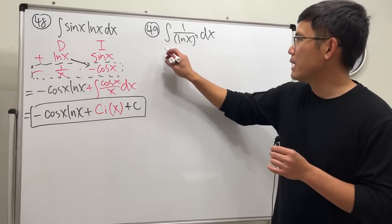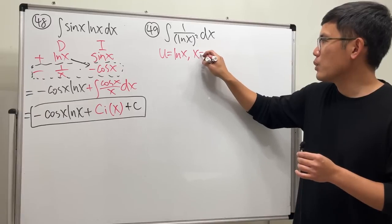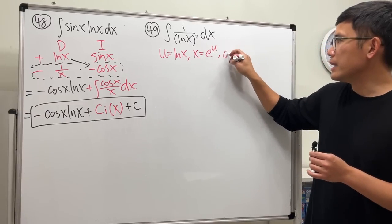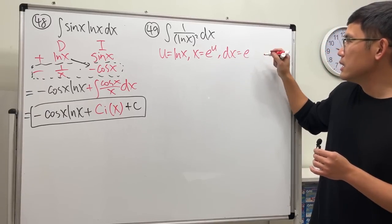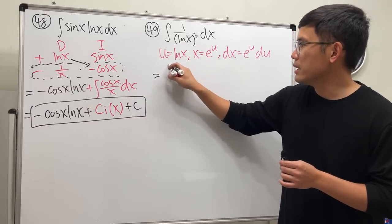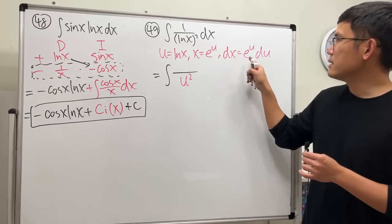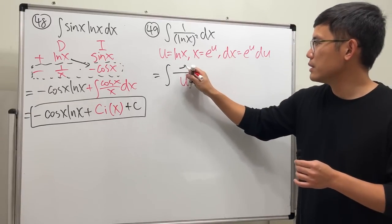I will still do u-sub. Let u equal ln x, so x equals e to the u, and then dx is e to the u du. This right here is the integral, and then we have u squared. dx is e to the u du.